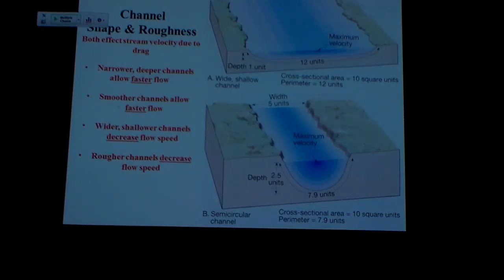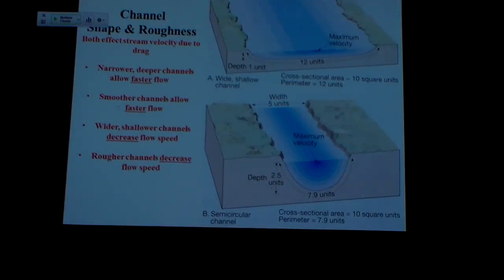Streams can also be looked at by the shape of their channel. There are a number of things about the channel that are just good rules of thumb. One is that narrow or deeper channels — like this U-shaped channel — will flow faster. They will much more efficiently transport water than a big, shallow, broad river system.